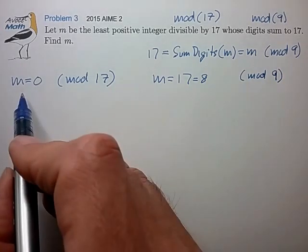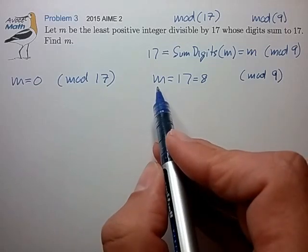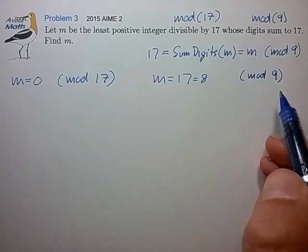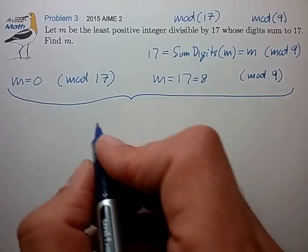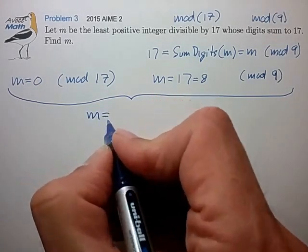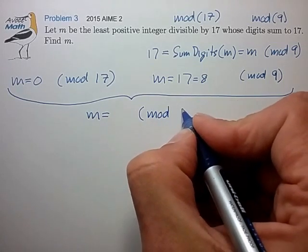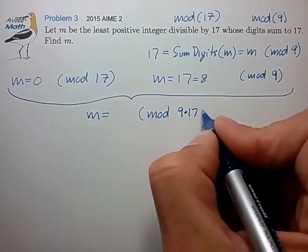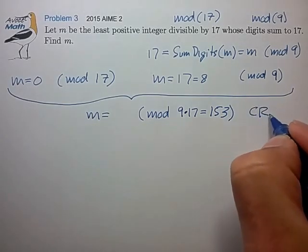Now we have these two conditions on the number m: a condition in mod 17 and a condition in mod 9. From the Chinese Remainder Theorem, we are now able to find what m is equal to in mod 9 times 17, which is 153.